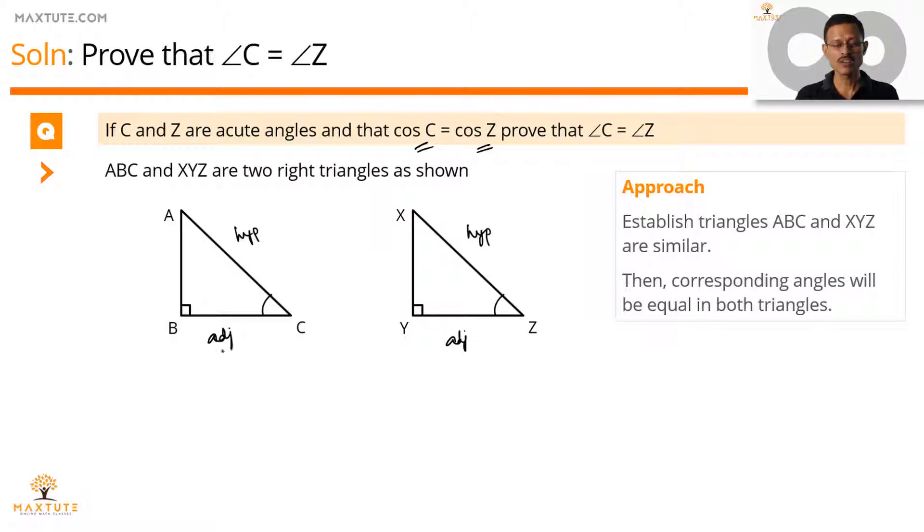So what will be cos C? Cos C is equal to BC by AC and what will be cos Z? Cos Z will be equal to YZ by XZ. The question says cos C is equal to cos Z, so we can equate these two. So BC by AC is equal to YZ by XZ. Let's just swap these two terms and rewrite it. So we can write it as BC by YZ is equal to AC by XZ, and let's say this is equal to some K.